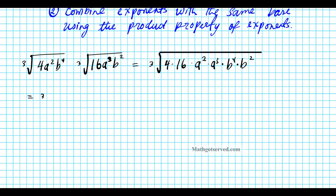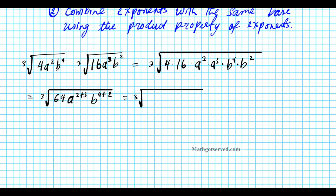We're going to have the third root of 4 times 16, which is 64. Then a squared times a to the third — you just add the powers — so it will be a to the 2 plus 3. And then b to the 4 plus 2. So that will be our radicand. Now let's simplify: we're going to have the third root of 64a to the 5, b to the sixth.